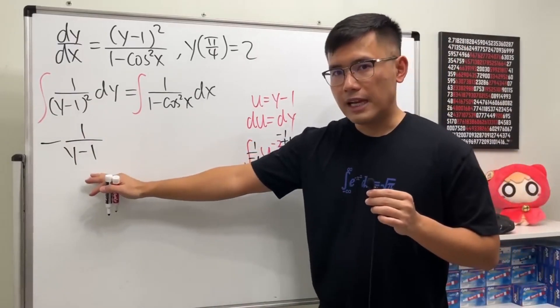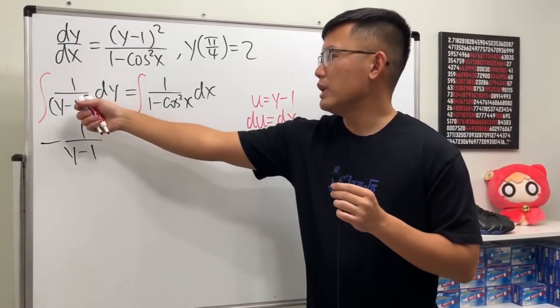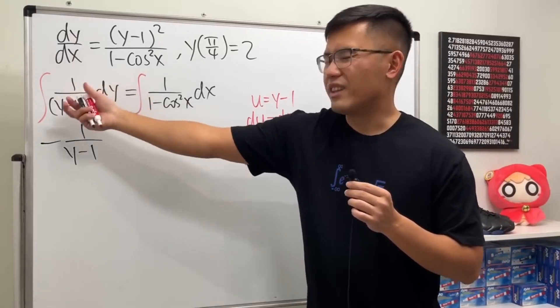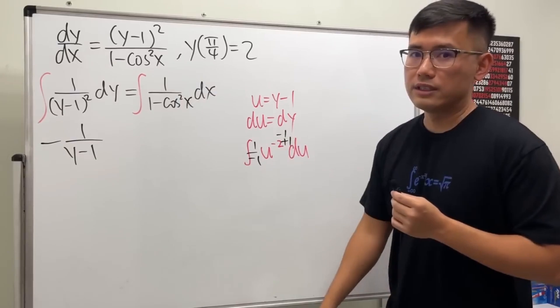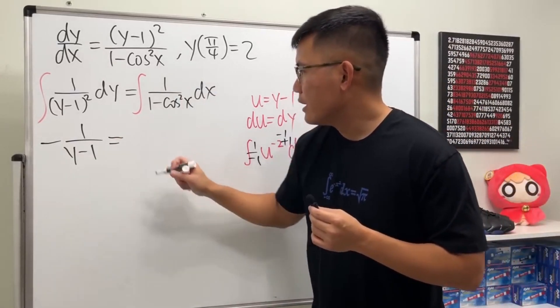So that's the left-hand side. You don't have to put the plus C because technically we have integrals on both sides with constants on both sides, but we can move the constant just to the right-hand side.